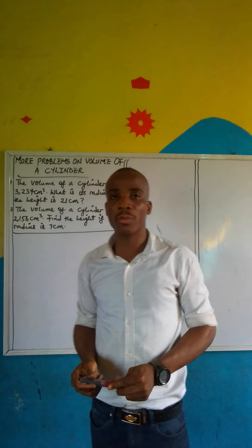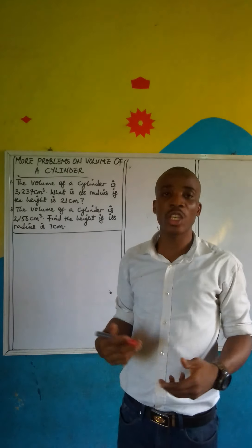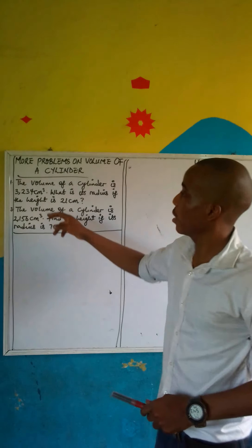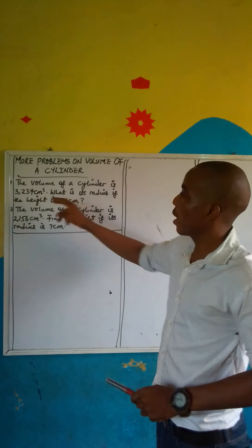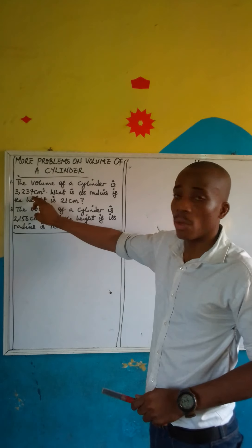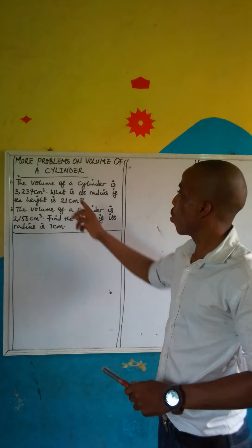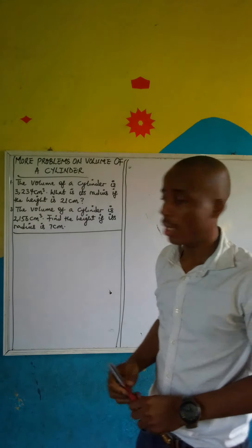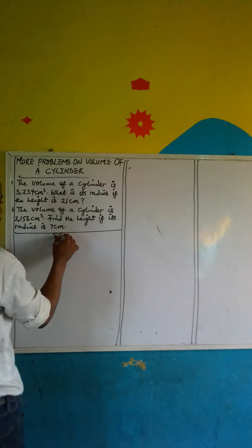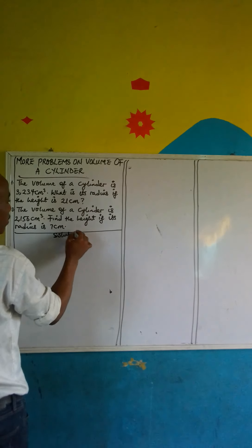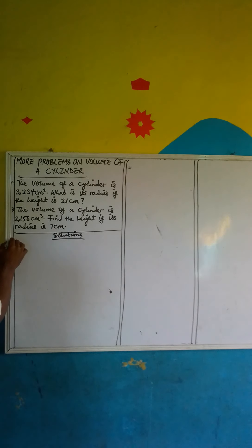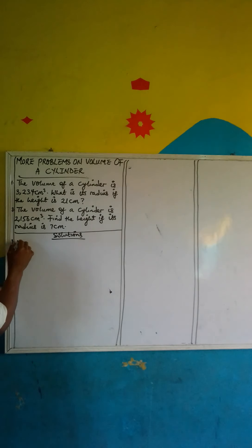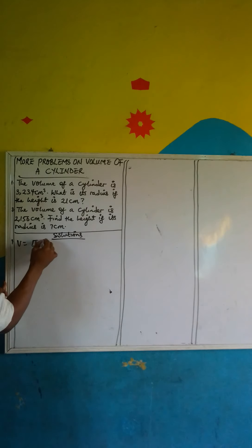We are going to focus on the volume of a cylinder and take more problems on it. In this first question, the volume of a cylinder is 3,234 cm cubed. What is its radius if the height is 21 cm? Now, we know that the formula for calculating the volume of a cylinder is: Volume = π r squared h.